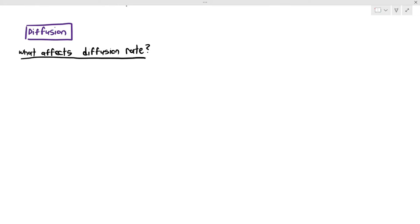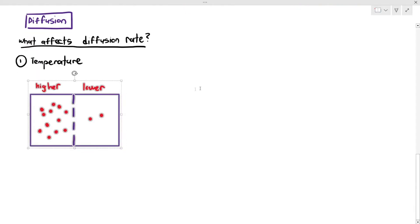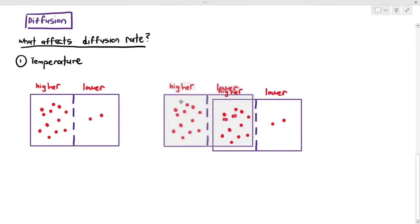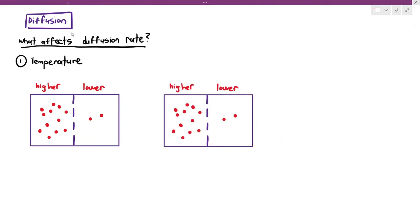Now, the first most obvious factor that will affect diffusion rate is temperature. Temperature is the easiest thing to explain. In this case here, we are going to show you two situations. In one particular situation on the left, it's in 5 degrees Celsius, and on the right side, it is 30 degrees Celsius.